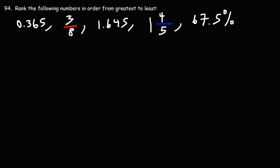94. Rank the following numbers in order from greatest to least. Now, what I like to do in a situation like this is to convert everything to a decimal number.